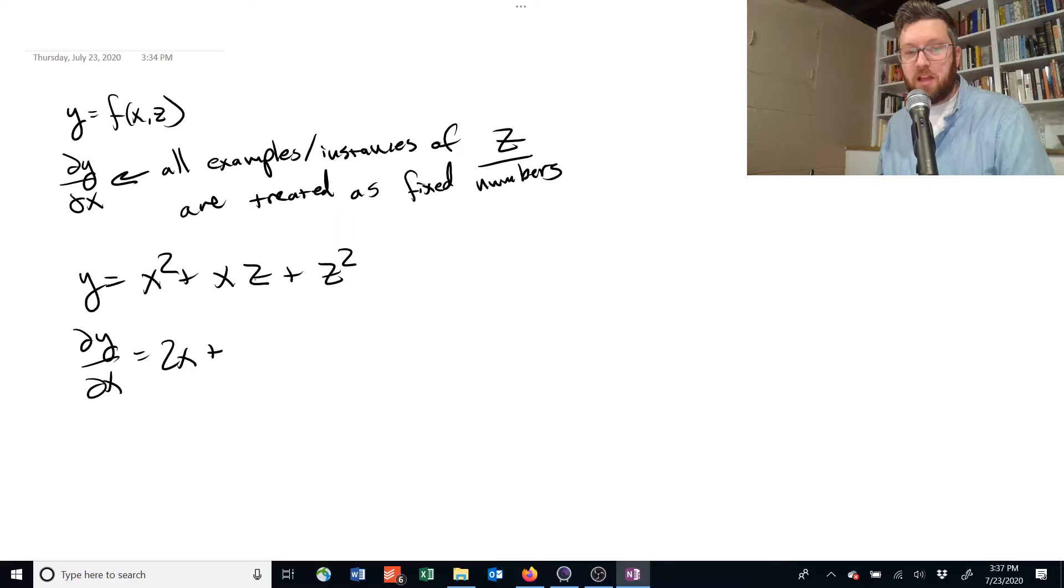The second one, we've got x multiplied by z. But remember, we're just going to treat z as if it's a number. If z was the number 2, we would just write 2 out front. But since it's z, we write z instead.